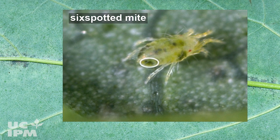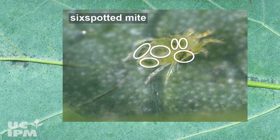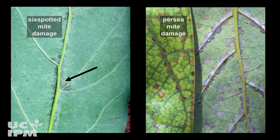Six-spotted mites look very similar to persea mites, but have exactly six dark blotches on their bodies. They also feed on the leaf undersides and prefer to feed next to the midrib and large veins. But unlike persea mites, damage from six-spotted mites consists of irregularly shaped or continuous purple blotches along the veins.